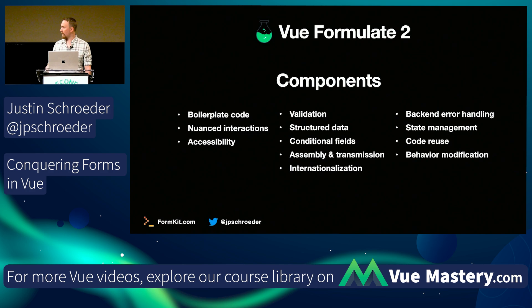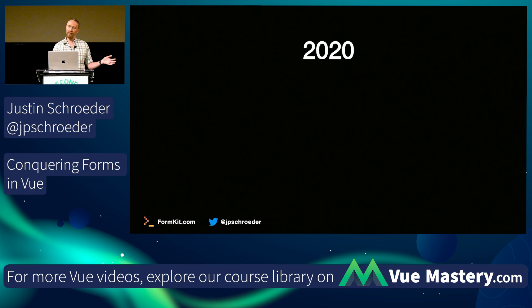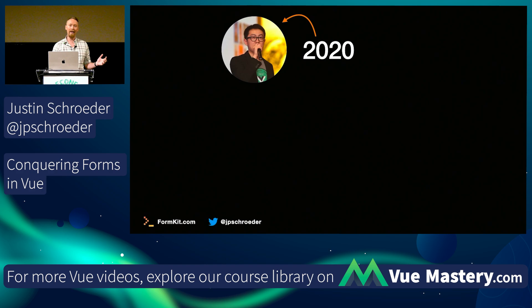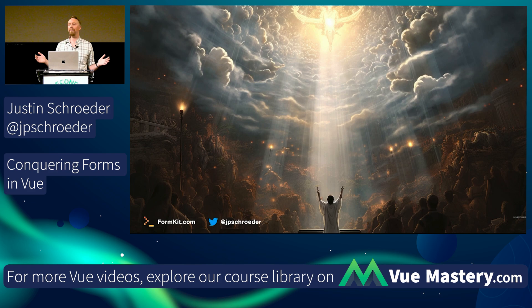That actually worked pretty well, except a store doesn't model a form in a particularly good way. You can model maybe the data, but how about the errors, the validation, the backend stuff? It just didn't model it very well, so we went back to the drawing boards. Components, maybe with provide/inject — so they sort of know where they are in the form. We did this with VueFormulate 2. And this actually worked a lot better, except for part of it. Then in 2020, Vue 3 happened and that entire component architecture needed to get rewritten.